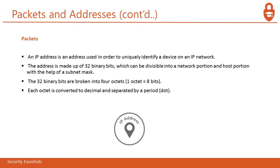An IP address is used to uniquely identify a specific device on an IP network. The address is made up of a 32-bit binary number, divisible into a network portion and a host portion with the help of a subnet mask. The 32 binary bits are broken into four octets — one octet equals eight bits — and each octet is converted into decimal and separated by a dot. For example, 192.168.1.5 is a 32-bit IP address. To check your IP address on Windows, type 'ipconfig' in the command prompt; on Linux, type 'ifconfig' in the terminal.